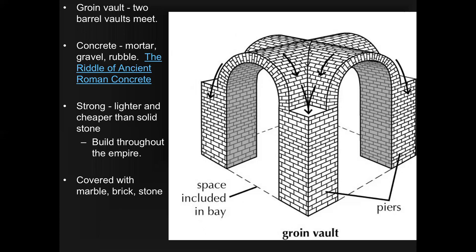The material the Romans are most famous for — they didn't develop it, it existed before, but they used and perfected it — was concrete. Concrete is a very simple material, but depending on how you balance the ingredients, it makes a big difference. Concrete is mortar — something sticky — gravel, and rubble, plus water. These are types of things you can find anywhere throughout the empire.